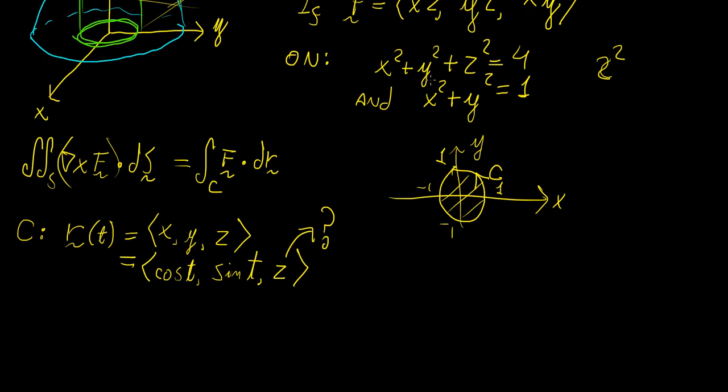So one thing we can do is we can subtract this from the top, just to get rid of X and Y. So basically, x² + y² + z² = 4 minus x² + y² = 1. So we subtract the two equations, so those terms cancel out. We're left with z² = 3, which means that Z is going to be equal to plus or minus square root 3.